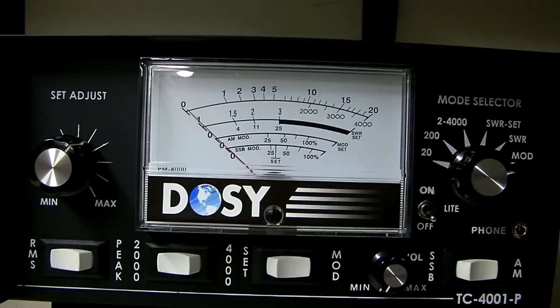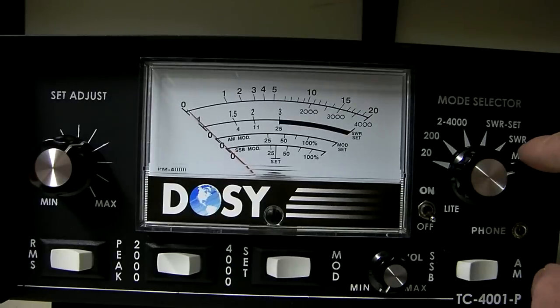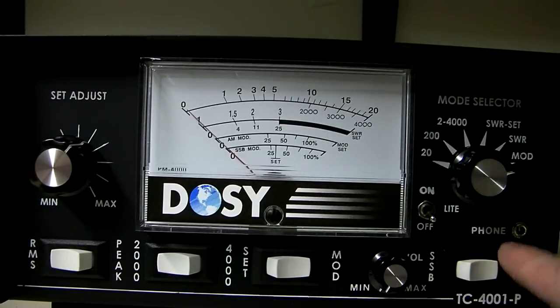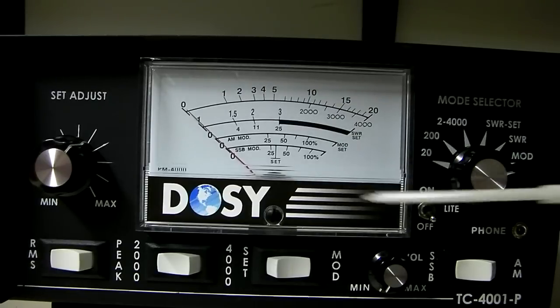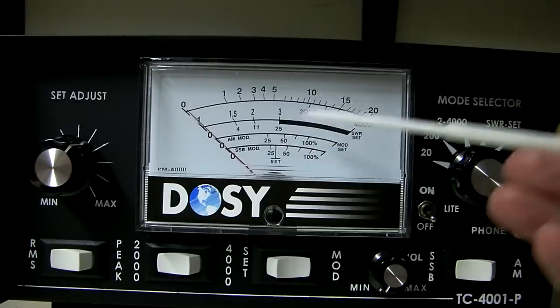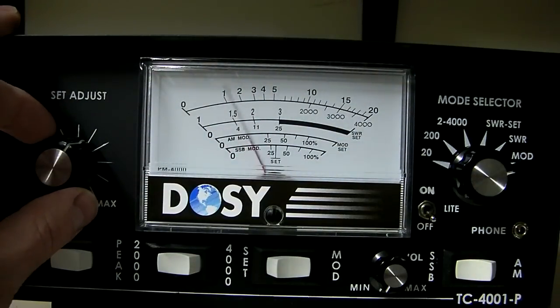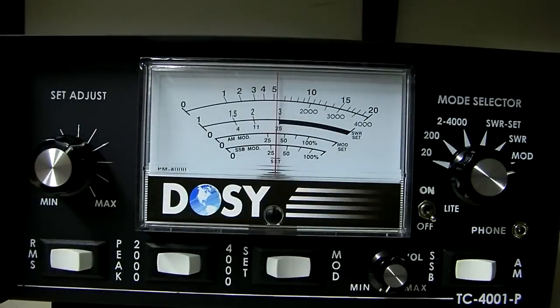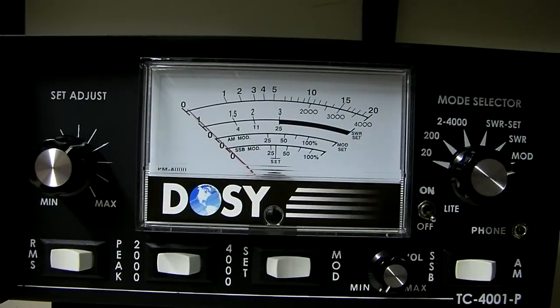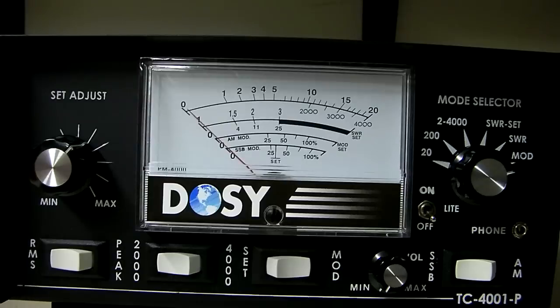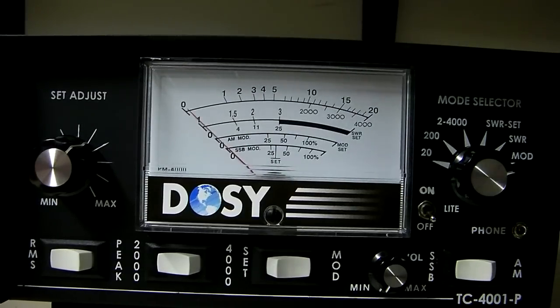This also has an option to measure single sideband modulation. To do that, you set it to the mod position. You switch the single sideband AM rocker to single sideband. And what you do is you have to do the transmitter to start off in AM mode for setting the modulation meter. So what you'll do is you'll set the modulation to the set position on the single sideband scale. There we go. Right there. Okay. And now what we'll do is we're going to look at this lower scale. And we'll switch the radio into lower sideband. Audio. One, two, three. One, two, three. So that's a single sideband modulation.